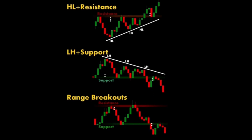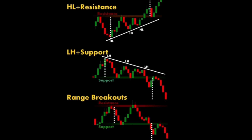Six: range breakouts. This occurs when the price breaks out of a horizontal range where it has been trading between support and resistance levels for an extended period. Factors to consider for breakout trading include volume.